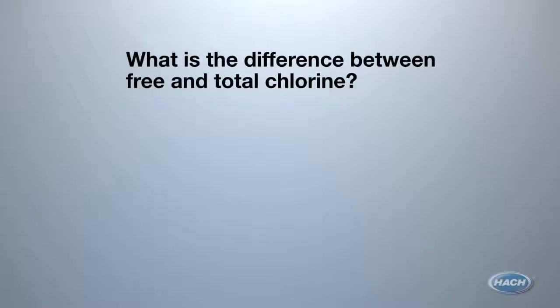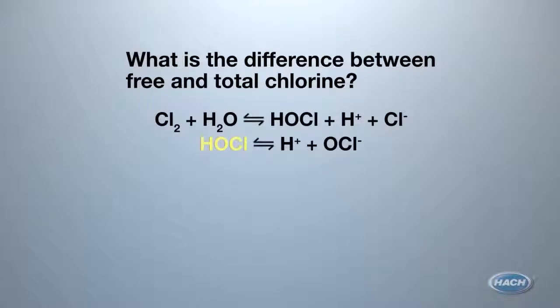What is the difference between free and total chlorine? Free chlorine refers to both hypochlorous acid and the hypochlorite ion or bleach and is the form of chemical commonly added to water systems for disinfection.